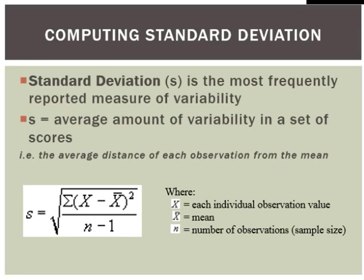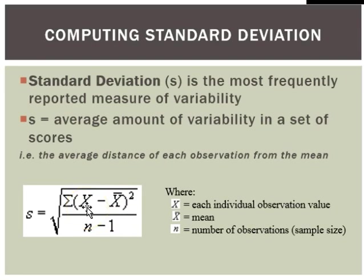It's much more common to see the standard deviation reported along with your metric of central tendency to describe the variability in your data set. All the standard deviation is doing is calculating the average distance that each observation is from the mean. The formula looks a little more complex, but we can break it down: we take every single observation value and subtract the mean from it — we're calculating the difference between every single observation and the mean — then we square these values and sum them all up.